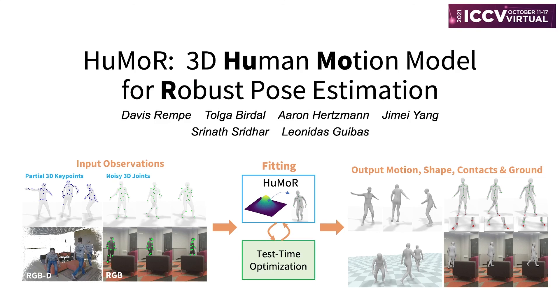In summary, Humor is an expressive generative model that captures plausible human motions. And when applied to pose and shape estimation through optimization, it enables robust reconstruction even under partial or noisy observations. Thank you for your attention.